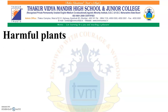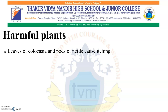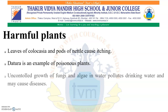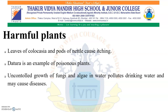All plants are not useful — some are harmful. Leaves of colocasia and pores of nettle cause itching. Dhatura is an example of a poisonous plant. Uncontrolled growth of fungi and algae in water pollutes drinking water and may cause diseases.